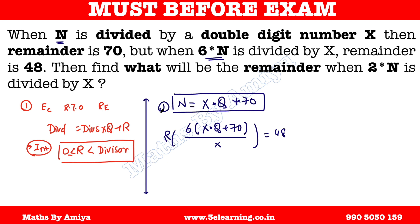This first statement gives us the value of N in terms of X and Q. The second statement tells us that 6 times N divided by X gives remainder 48. We are going to use Remainder Theorem 1 to proceed.